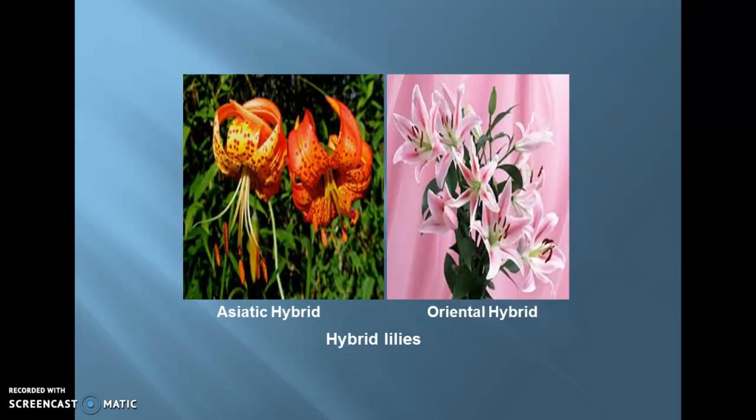Next one is hybrid lilies. We can classify the hybrid lilies into two main types: Asiatic hybrid lilies and Oriental hybrid lilies. Asiatic hybrid lilies have small flowers that come in bright shades of yellow, gold, pink, white, or orange, and they bear no fragrance. Whereas the Oriental lilies have large flowers whose color ranges from pink, red, purple, and white, and they do have fragrance.